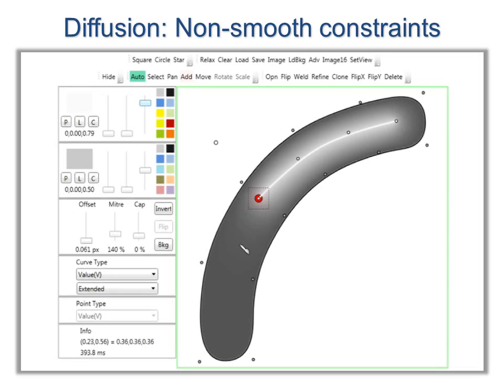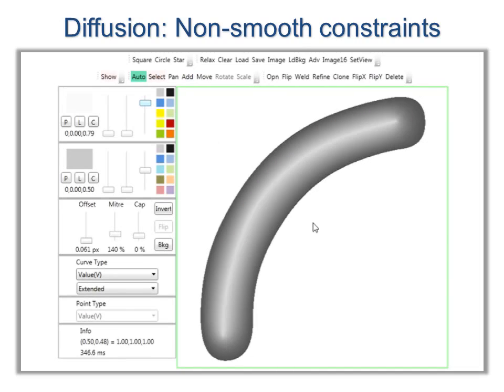Such Laplacian diffusion, however, leads to derivative discontinuities at constraints, such as the sharp crease on the middle curve.